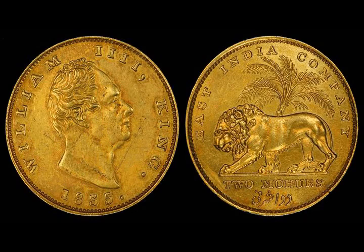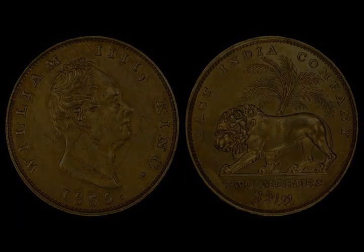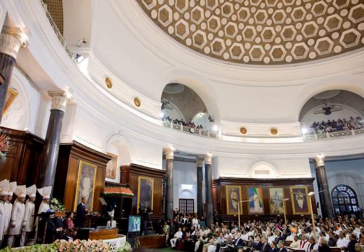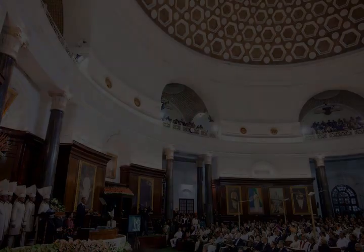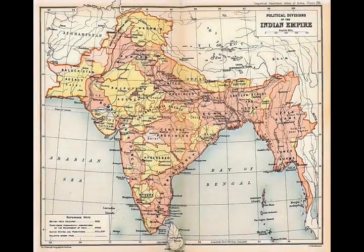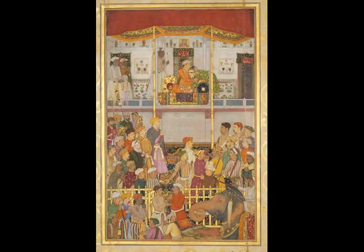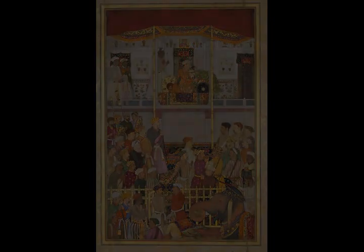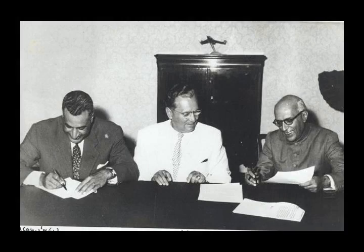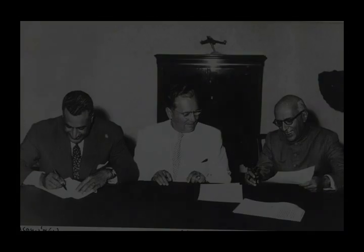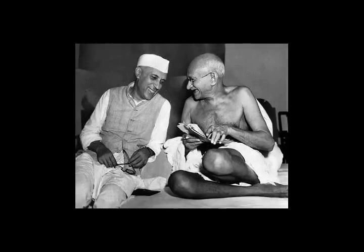In the late Vedic period, around the 6th century BCE, the small states and chiefdoms of the Ganges Plain and the northwestern regions had consolidated into 16 major oligarchies and monarchies known as the Mahajanapadas. The emerging urbanization gave rise to non-Vedic religious movements, two of which became independent religions. Jainism came into prominence during the life of its exemplar Mahavira. Buddhism, based on the teachings of Gautama Buddha, attracted followers from all social classes, and both religions held up renunciation as an ideal and established long-lasting monastic traditions.